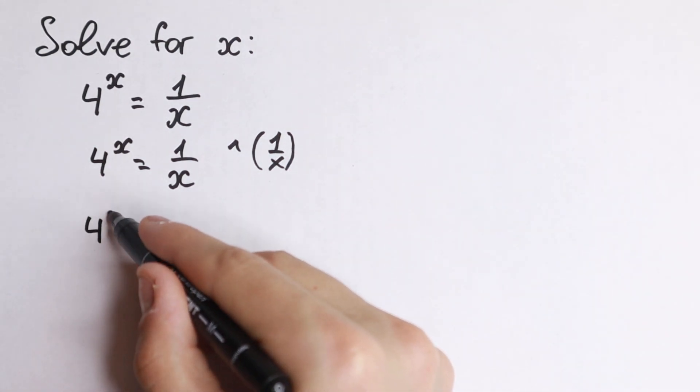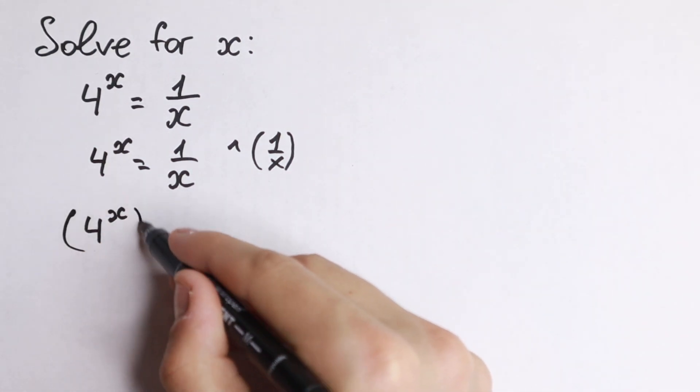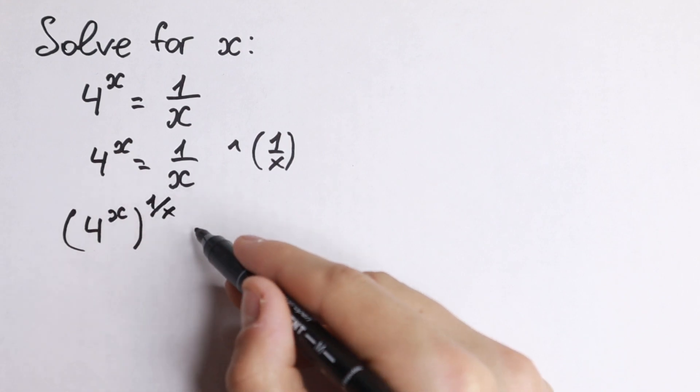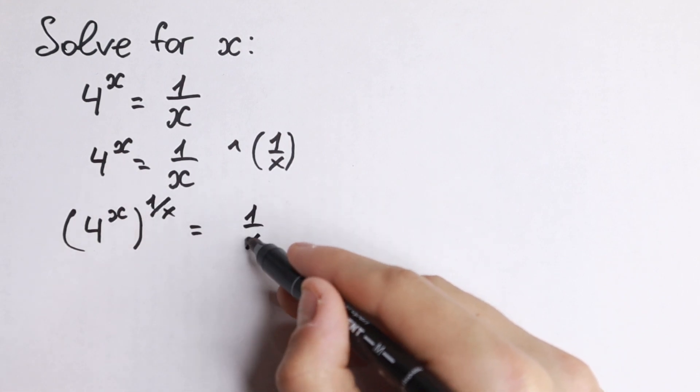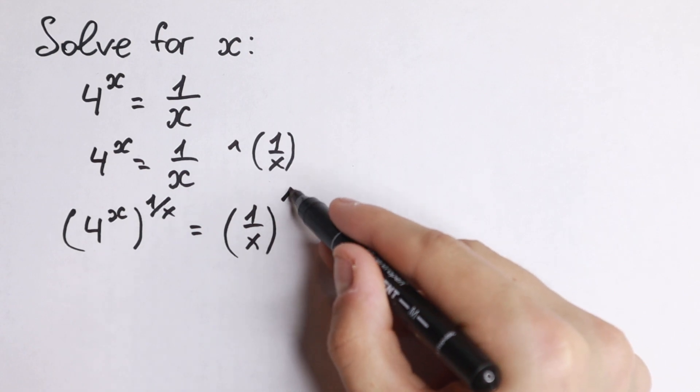So we will have 4 to the x on the left hand side, and we raise this to the power 1 over x. And it will be equal to 1 over x, all raised to the power 1 over x.